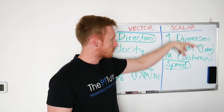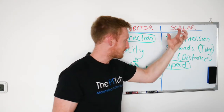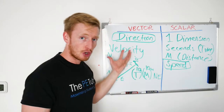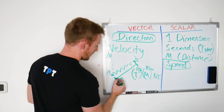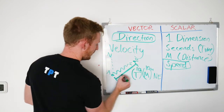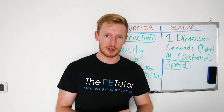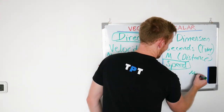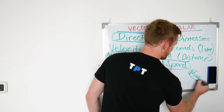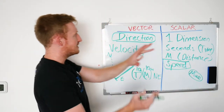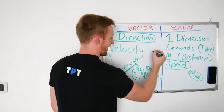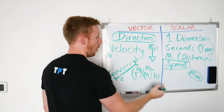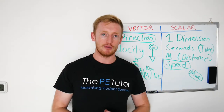That's one dimension — we're just measuring motion in one way. Whereas vector quantities must have some form of direction attached to it. So someone's weight, for example, is their mass — which would be scalar — but to turn it into a vector, or weight, we would have to add the direction of gravity onto the mass to generate that figure of weight.